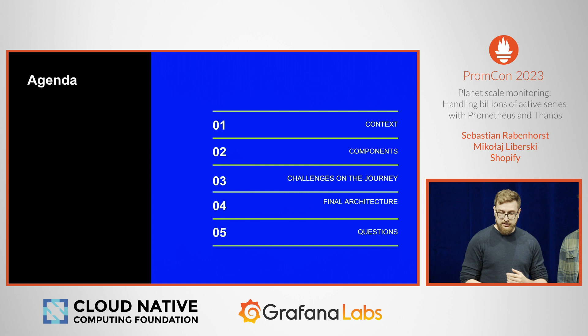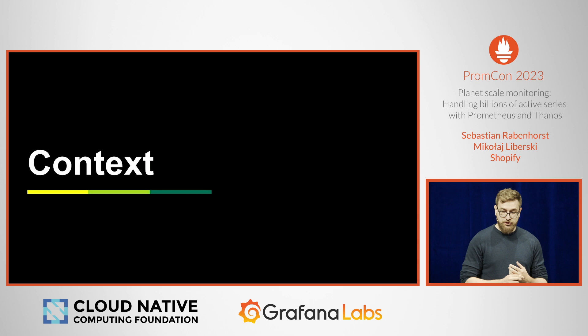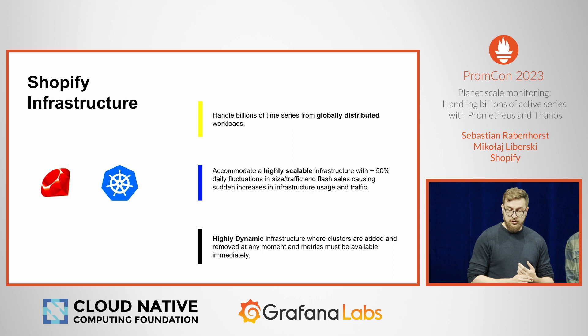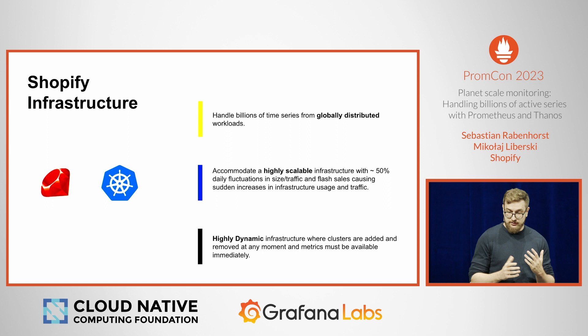Let me fill you in on a bit of context about Shopify's unique challenges and infrastructure choices, so Sebastian can present the actual system architecture. Shopify is one of the few biggest Ruby shops in the world, and the stack is deployed as a significant portion of the company infrastructure on Kubernetes. Some specific context on why this company may have unique characteristics that provide a tough set of constraints for a system like this.